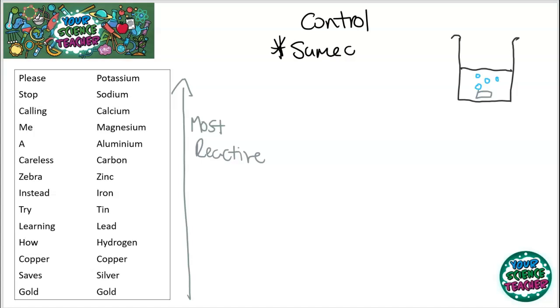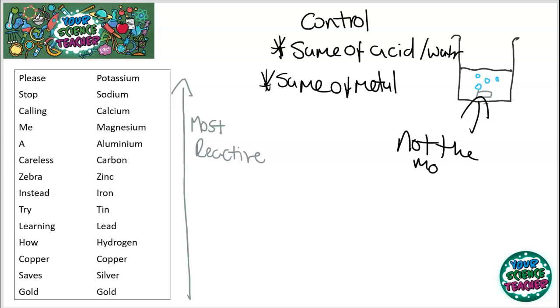You use the same amount of acid or water, and you use the same amount of metal. But this technique, basically, to determine reactivity, all you need to do is count the number of bubbles that come off that metal, which, as you can imagine, means that it's not the most reliable of experiments.